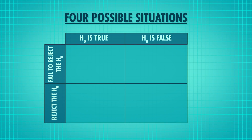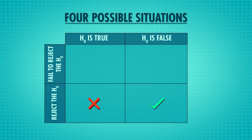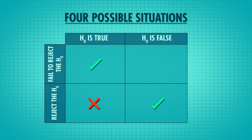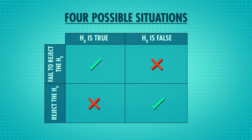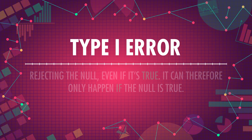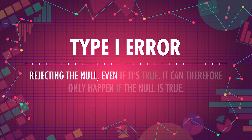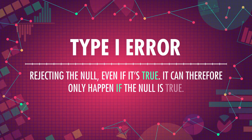So we've narrowed it down to two decisions: we can either reject or fail to reject the null. The null can be either true or not true. That means there are four possible situations: either you correctly reject the null, mistakenly reject the null, correctly fail to reject the null, or mistakenly fail to reject the null. In two of these situations we made the correct decisions, and in the other two we'd have made an error. The first error is called a type 1 error, which is rejecting the null even if it's true — it can therefore only happen if the null is true.